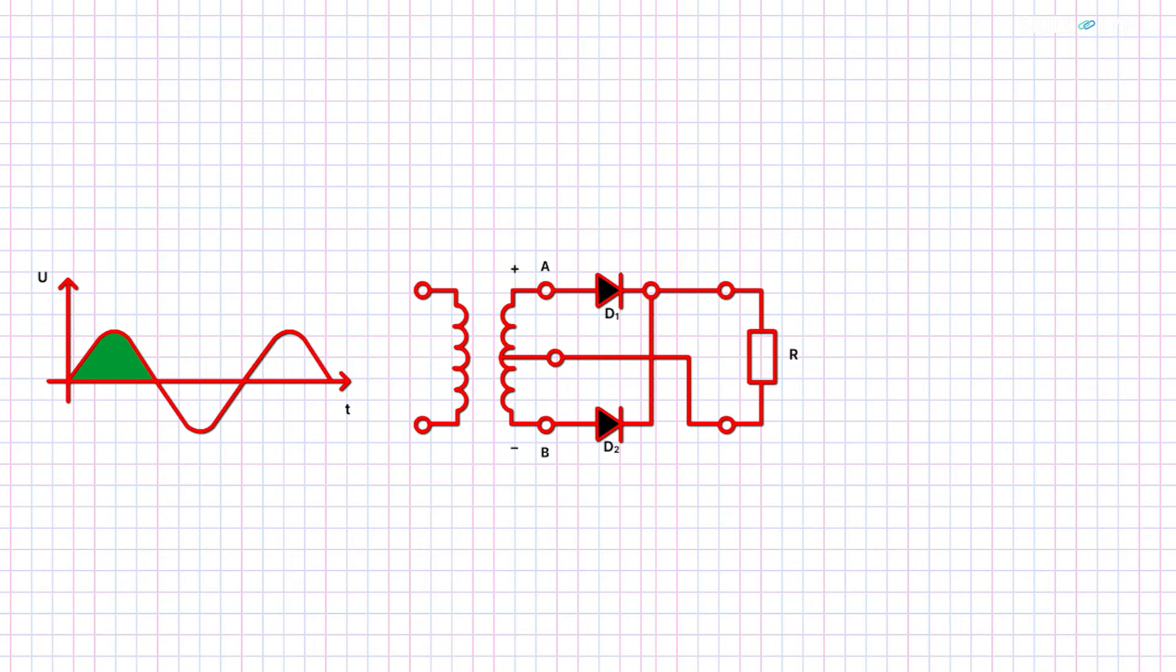Now, when the positive half of the AC current passes through the transformer, point A is at a higher potential than point B. This makes the diode at point A to be forward-biased, and hence, the current flows through diode 1. The second diode is at a lower potential than diode 1, and hence, it acts as an open switch and no current flows through it.